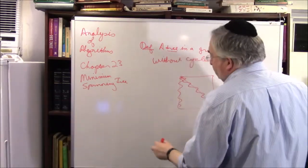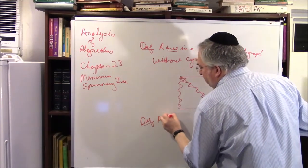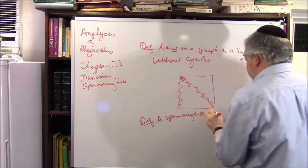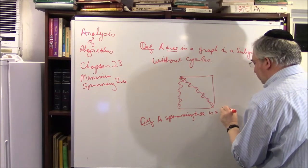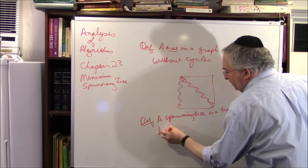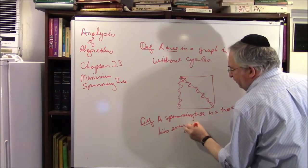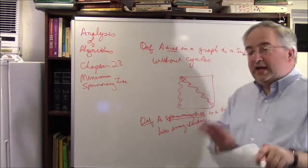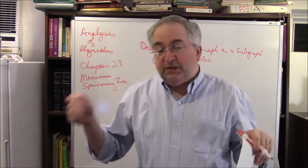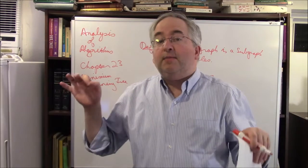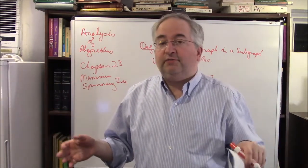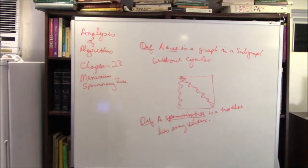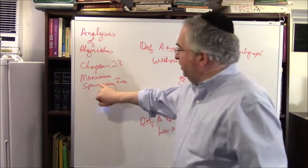Definition: a spanning tree is a tree that hits every vertex. In other words, this is a spanning tree — it goes to every vertex. Some of the edges are going to be in the tree but not all. A spanning tree hits all the vertices, all the dots.